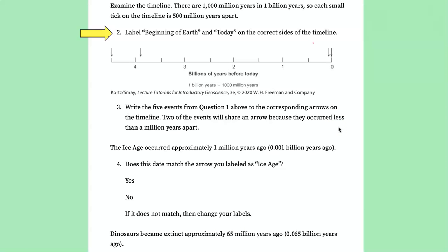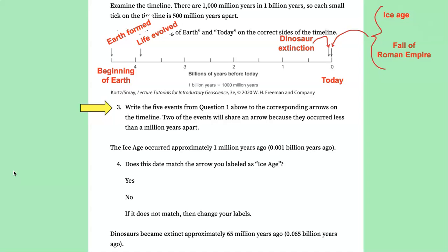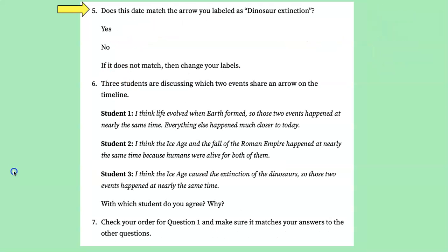Lower on the page it tells you to look at this timeline that shows billion-year marks. This is today and this is 1 billion, 2 billion, 3, 4.5 billion before the present. First we want you to label those so you're clear which direction is which, and then write the five events from question one at the corresponding arrows. The Earth formed back here at 4.5 billion years ago, life evolved around 3.8 billion years ago, the dinosaurs went extinct 65 million years ago, and then the Ice Age and the fall of Roman Empire are both so recent that on this timeline they're essentially at that same arrow. You want to make sure that you have the correct arrows showing these different events and have the dinosaur extinction listed correctly as well.